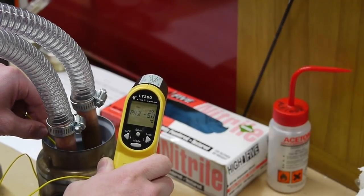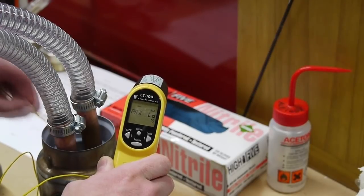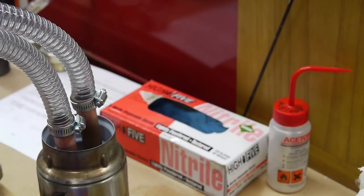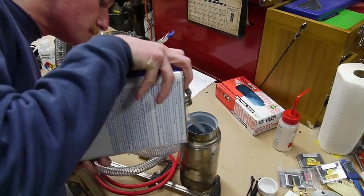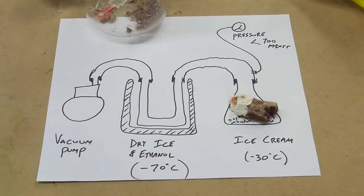If you don't need liquid nitrogen temperatures, a dry ice ethanol bath is a good alternative because it's a lot cheaper and easier to maintain. I can get dry ice at Safeway, which is what I usually do. They're open late at night and you get dry ice any time of day or night.